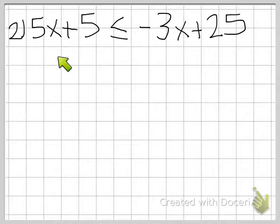So looking at the left side, there is nothing that I can combine there. I cannot combine the 5x and the 5. If I look on the right side, I cannot combine the negative 3x and the 25. So what we're going to have to do is move them to the other side of the inequality. So it doesn't matter which one we choose. We can either choose to do our x values or we can just do the numbers that are by themselves. Either way is okay.